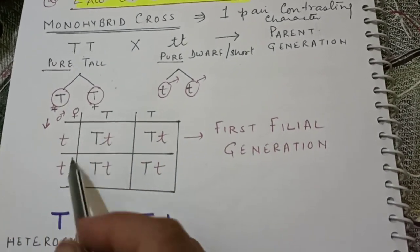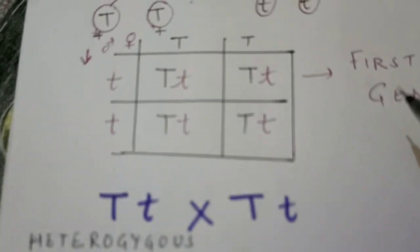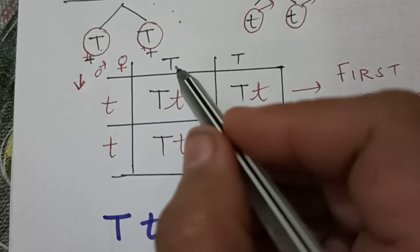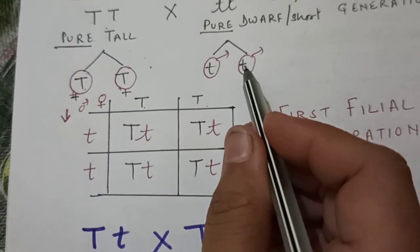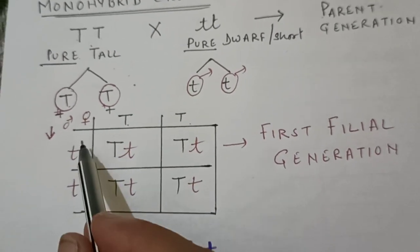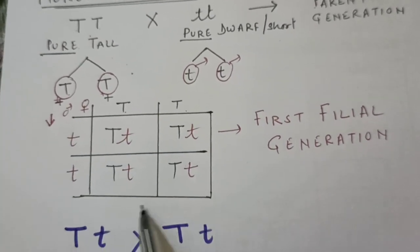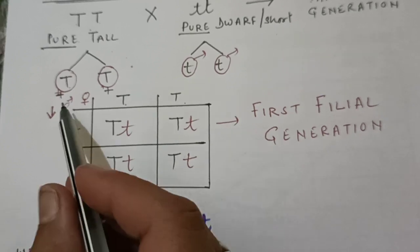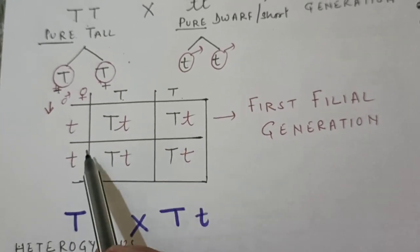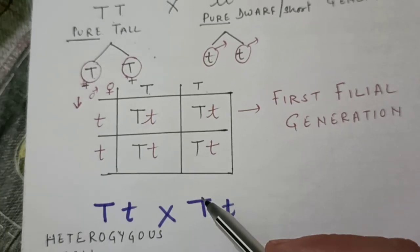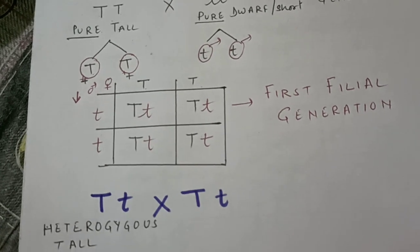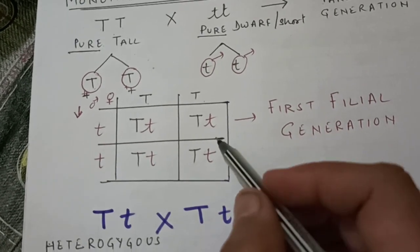According to law of dominance, when a cross will be there, these two female gametes written at the top and these two male gametes written vertically. This pattern of writing is block-wise pattern termed as Punnett square, because it was first of all used by the scientist Punnett.